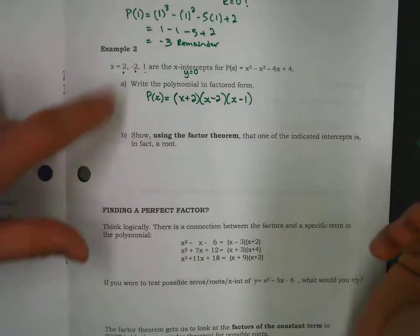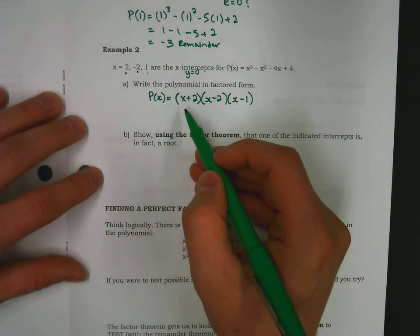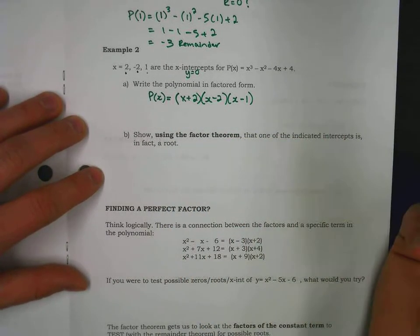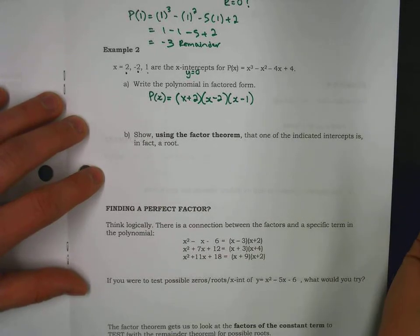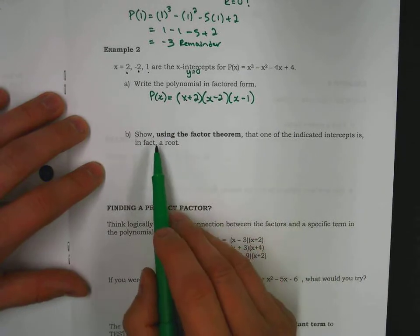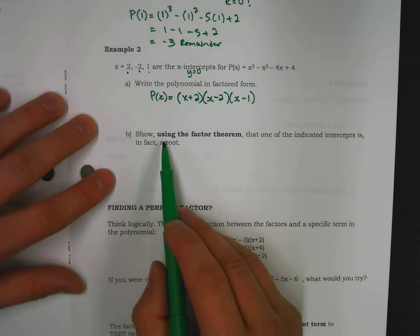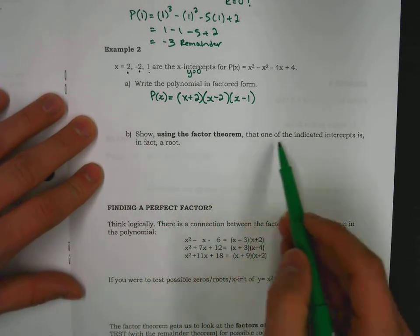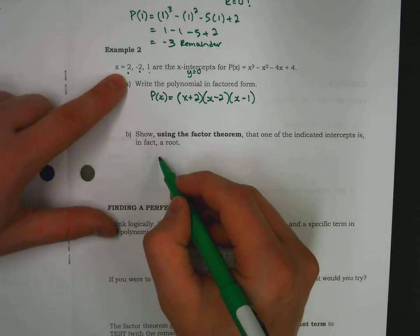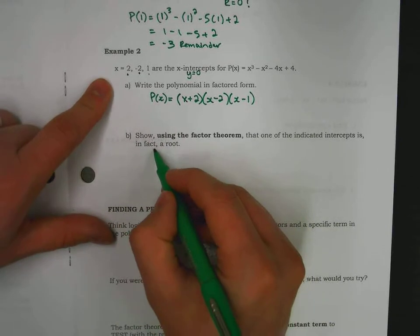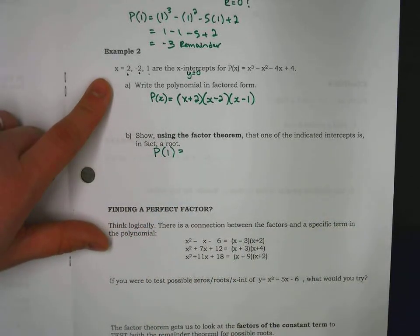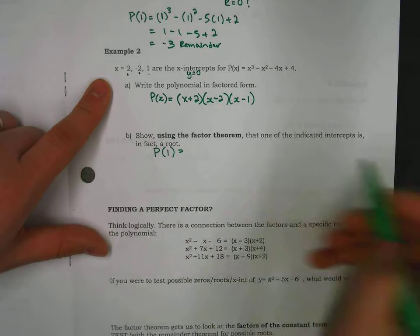And there might be a vertical stretch on this. There might be some a value in front, but this is a polynomial in factored form with those x-intercepts. Now, the second part is to show using the factor theorem that one of the indicated intercepts is in fact a root. So, let's pick arbitrarily x equals one. We're trying to show that if you plug in a one, that zero comes out.